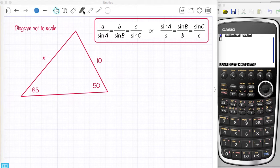So in this case I have two sides, 10 and X, and two angles which are 85 and 50. One of them I don't know, which is the X.